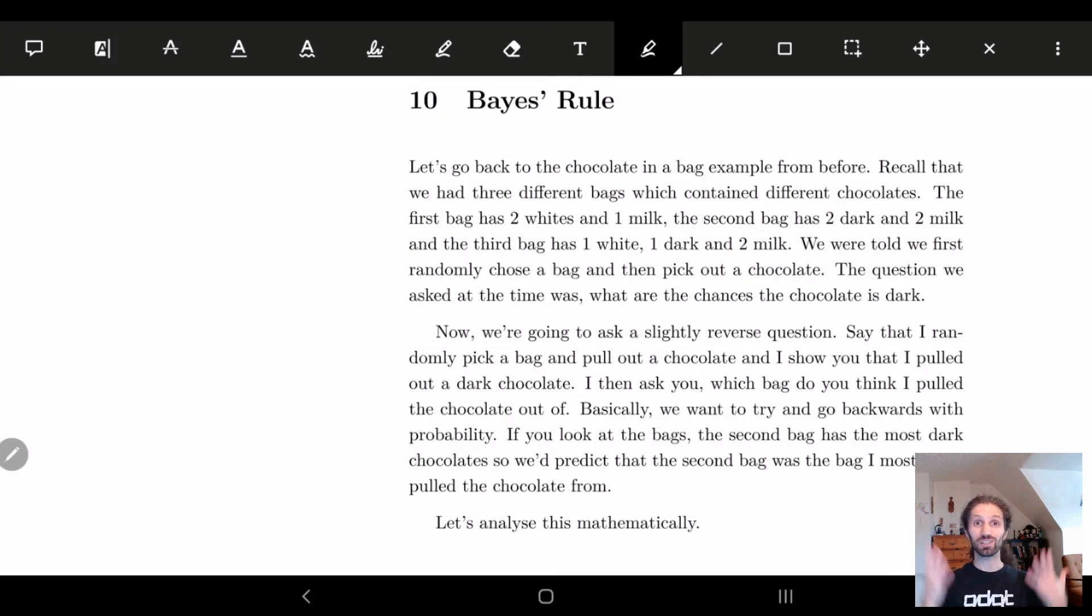Hi everyone. So in this video we're going to talk about Bayes rule and this is basically looking at conditional probability in a different way. It's kind of bizarre the first time you see it but it's actually really cool.